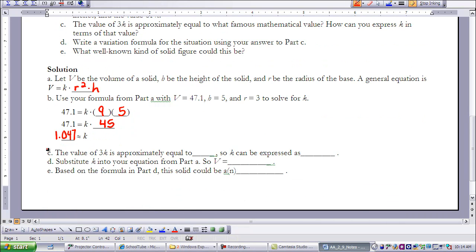The value of 3K is approximately equal to 3 times 1.047 is approximately 3.14. And we know that that is really pi.